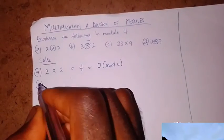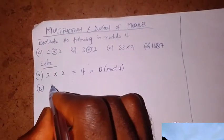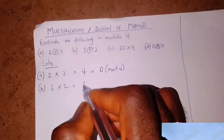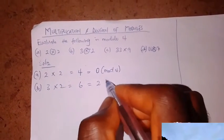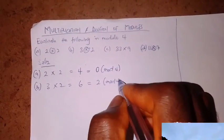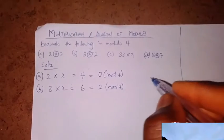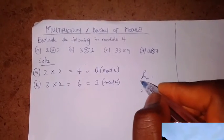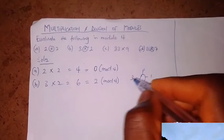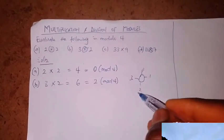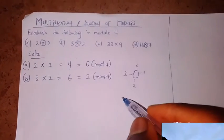For question B, we have 3 times 2. 3 times 2 normally is 6. 6 in modulo 4 is 2. So when we count 0, 1, 2, 3, 4, 5 — that's 2.